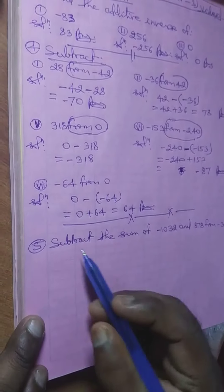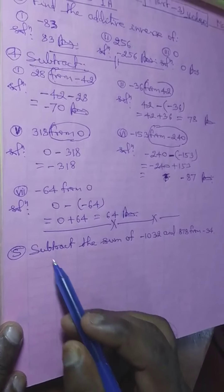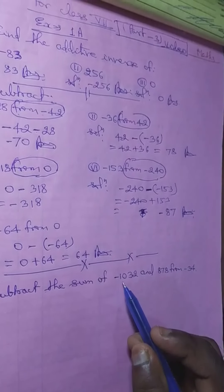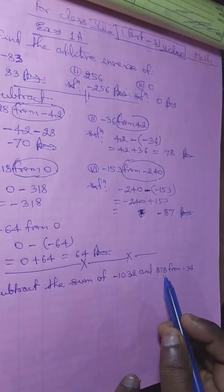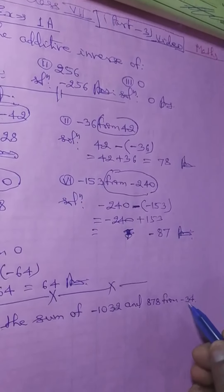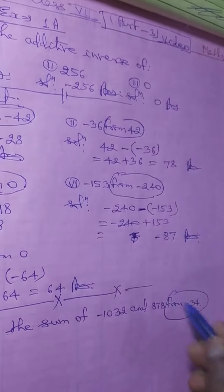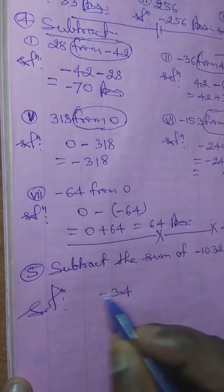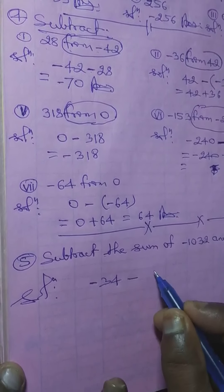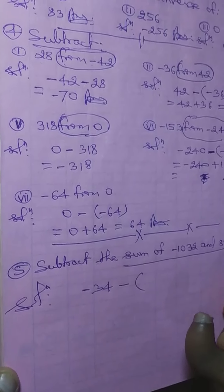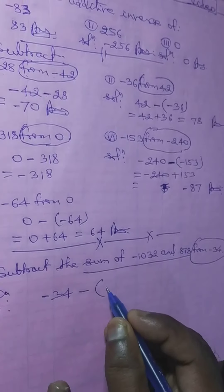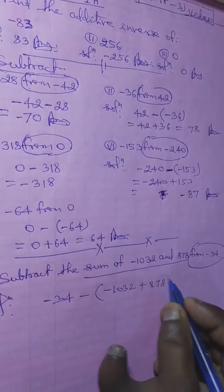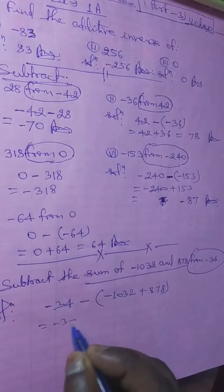Question number 5: subtract the sum of minus 132 and 1878 from minus 34. Solution: minus 34 minus (minus 132 plus 1878). First find the sum inside the bracket: minus 132 plus 1878.